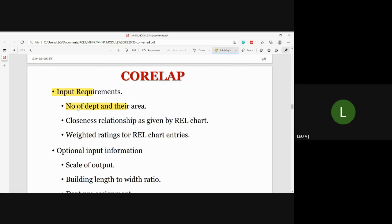Closeness relationship as given by the relationship chart. If we have an ALP (Activity Layout Planning), we have a closeness relationship. That is based on the relationship chart. We identify the closeness relationship between departments.